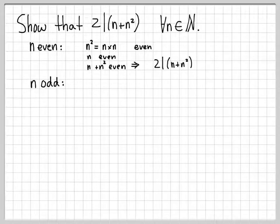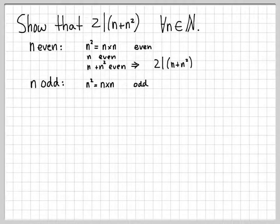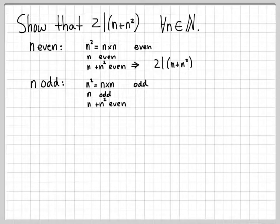Similarly, when n is odd, the quantity n squared, which is n times n, would be an odd times an odd, which is an odd number. If n is odd, then n is odd. So the sum of these two, n plus n squared, would be an odd number plus an odd number, which is an even number again. So even in the case when n is odd, n plus n squared is even, so two would divide n plus n squared.